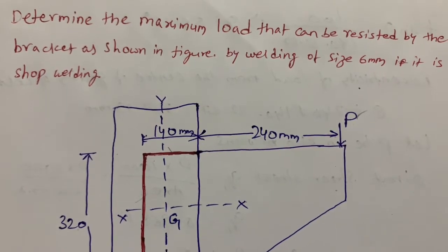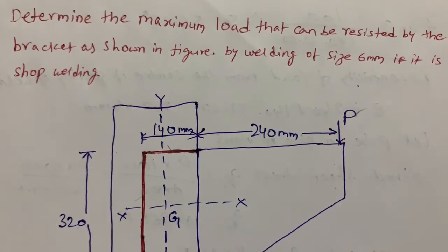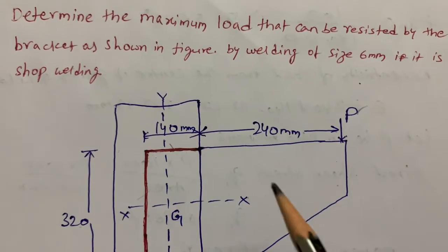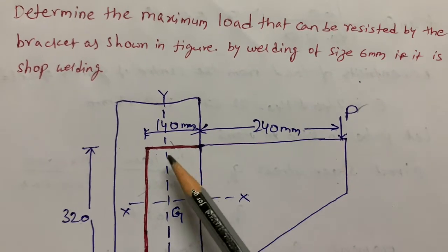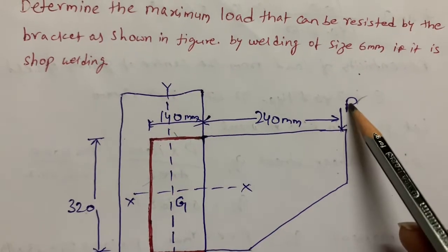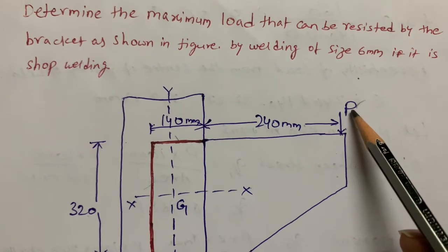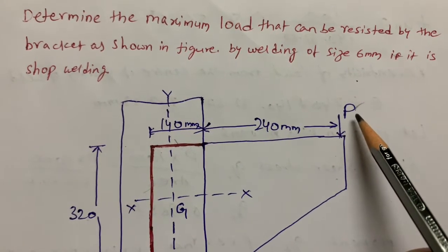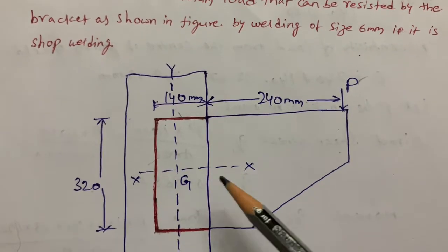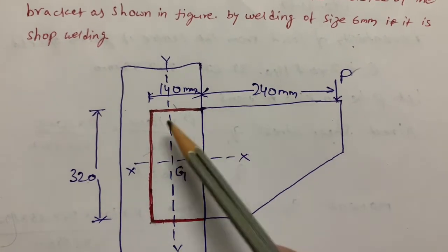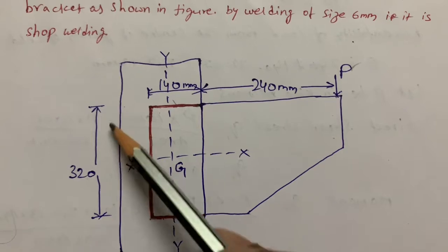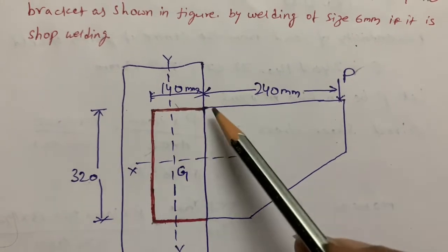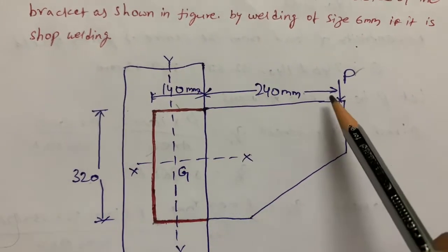Hello everyone. In this video I'll explain the eccentric model problem where two plates are joined by welding. We need to calculate the maximum load P value using the given data. Both plates are joined by welding, and the dimensions are 140 on one side and 240 on the other.